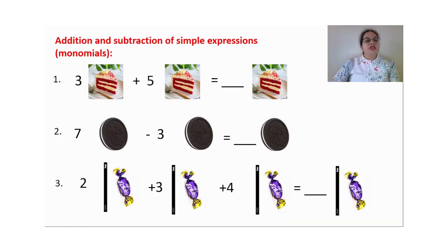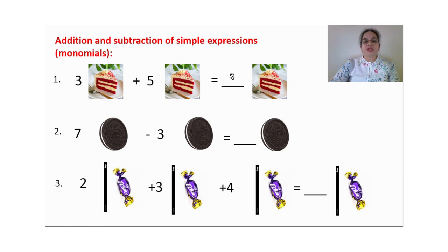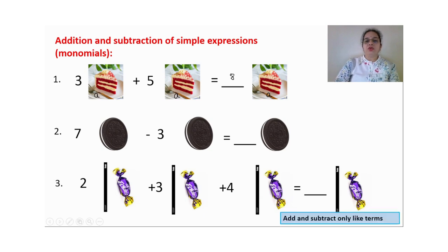Here you can see a pastry — a red velvet pastry, which I love very much. I have 3 red velvet pastries, and adding 5 more pastries: 3 plus 5 gives 8 pastries. Now if I replace 'pastries' with a variable — say A — then 3A plus 5A equals 8A.